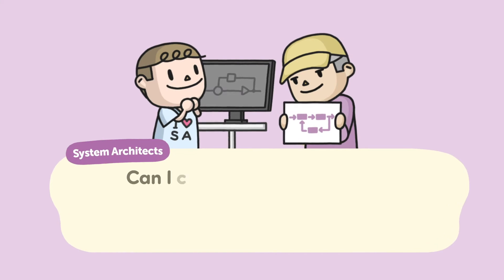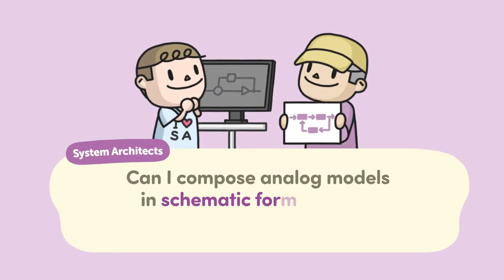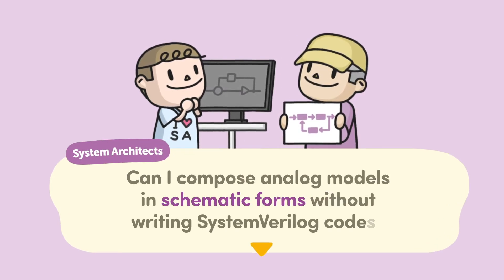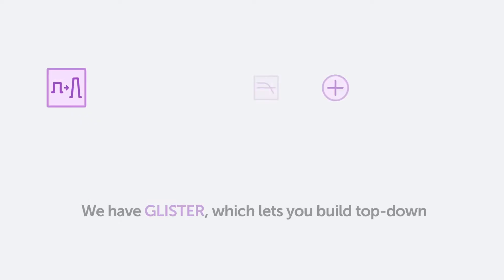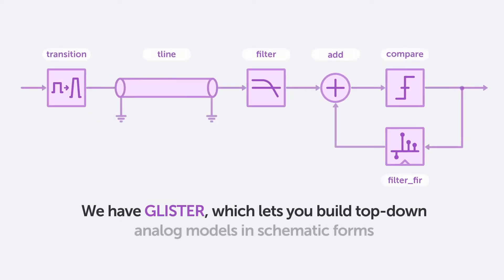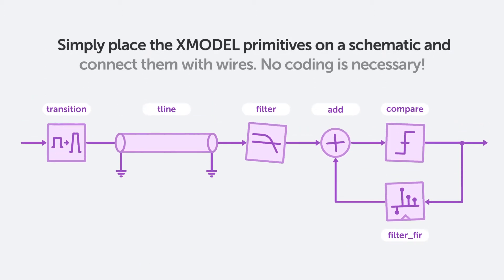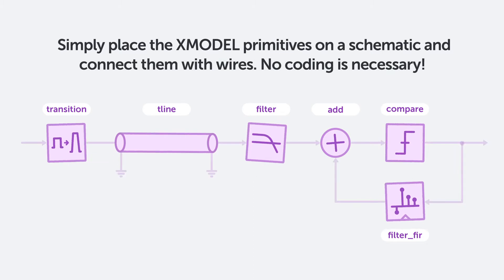Can I compose analog models in schematic form without writing SystemVerilog code? Yes, we have Glister, which lets you build top-down analog models in schematic form. Simply place the Xmodel primitives on a schematic and connect them with wires — no coding is necessary.